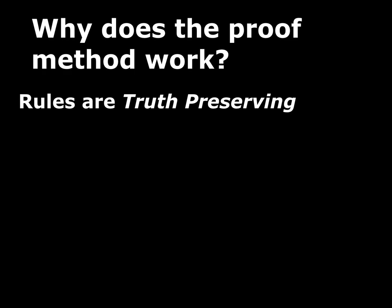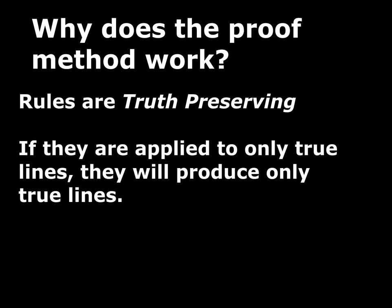The key is this: all of the rules that we have in Chapter 3 as well as Chapter 4 are truth-preserving. What does truth-preserving mean? The inference rules each require certain lines. Modus ponens needs a conditional and the antecedent; disjunctive syllogism needs a disjunction and the negation of one of the disjuncts. If you have those pieces, you can write a new line. Truth-preserving means that if those pieces are true, then the new line you produce will be true.